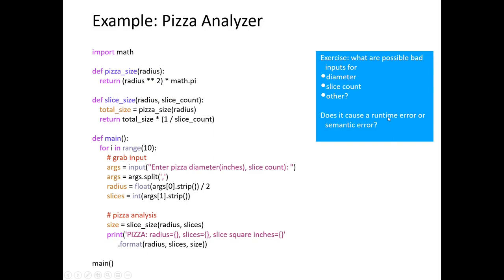Let's look at the code. We're importing math because we use pi. We define two functions: pizza_size takes the radius and computes the area using r squared times pi. A better name might be 'area of a circle.' Then slice_size takes the radius and the slice count, calls pizza_size to get the total area, and returns total_size times one divided by slice_count — giving square inches of pizza per slice.